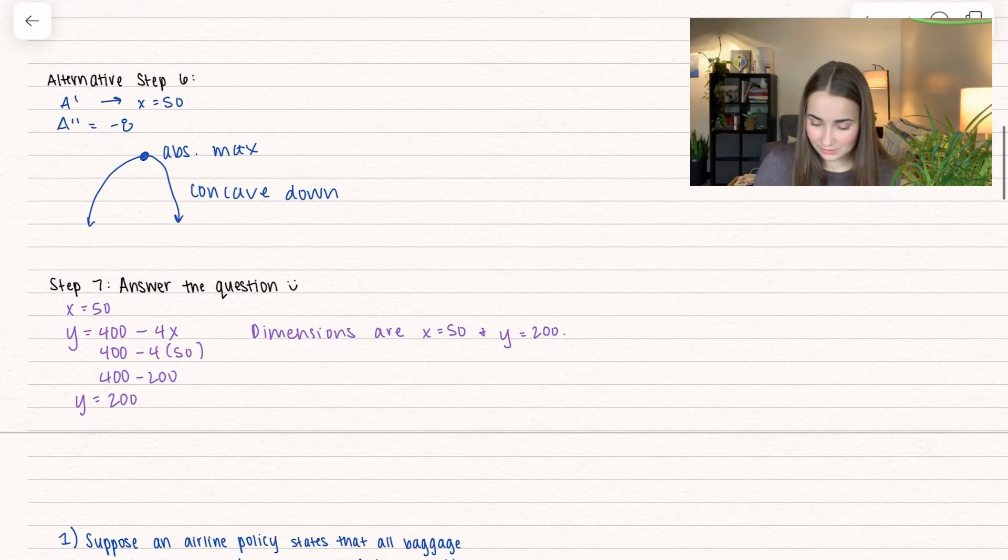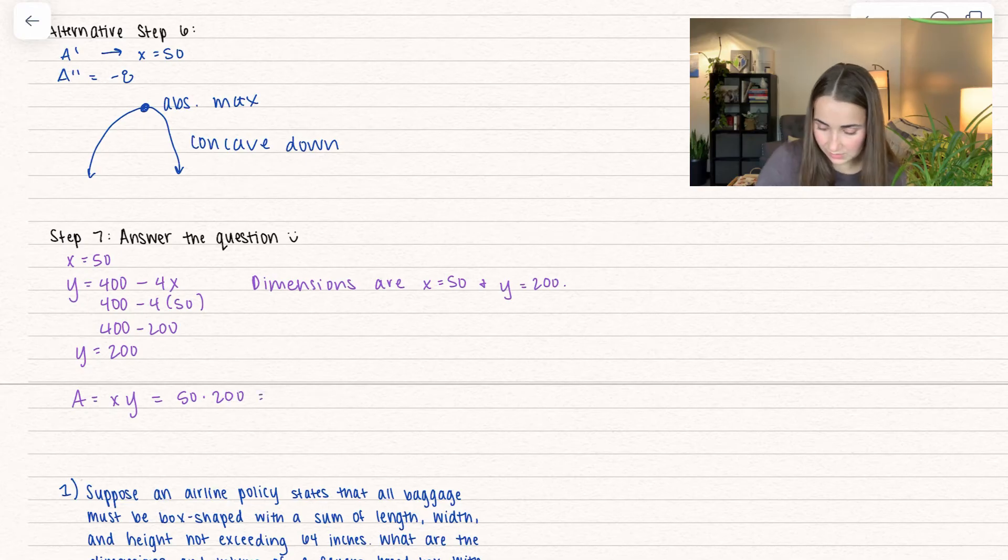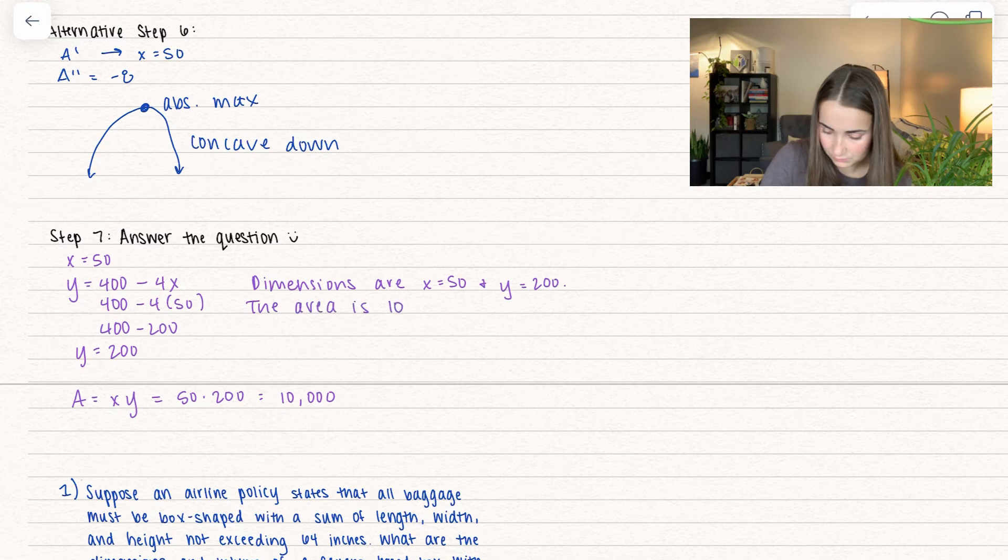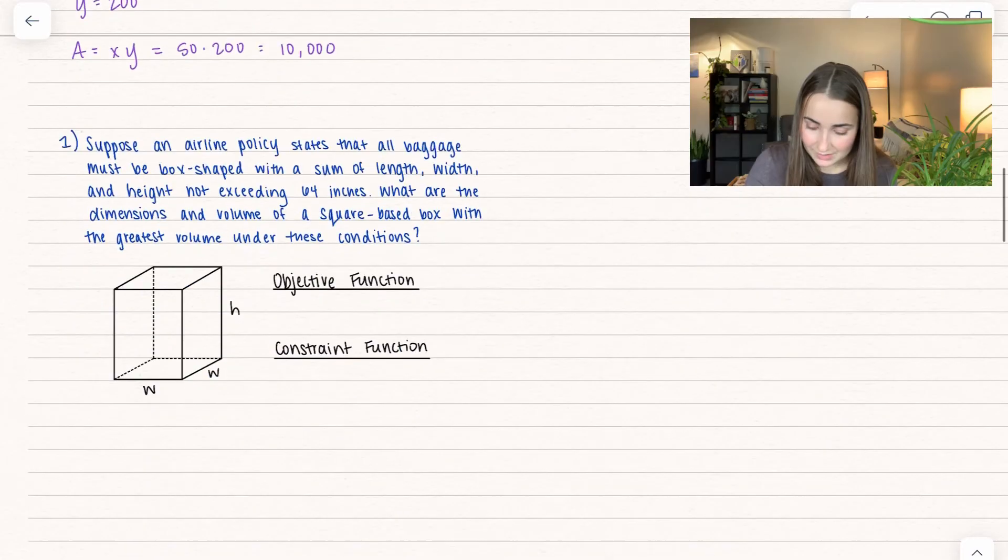So the dimensions are 50 and 200. Now let's answer the second part of the question. We need the area which equals X times Y. This is 50 times 200, giving us 10,000. And there we have it, that's our solution. What we're trying to do with optimization problems is use calculus to find how we can best optimize something - sometimes the absolute maximum area we can make, or sometimes the minimum cost of a function because we want to minimize spending. Let's see another example.